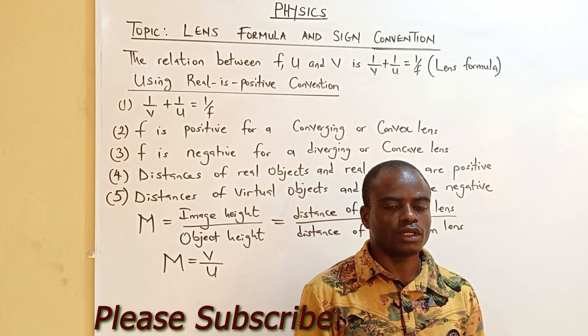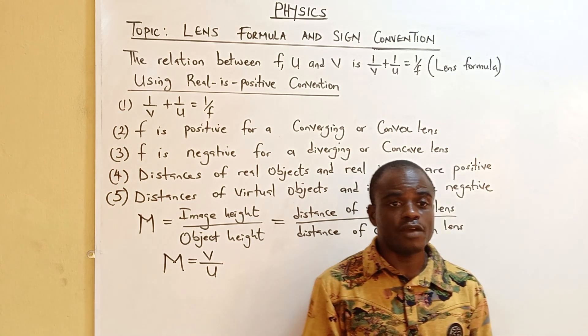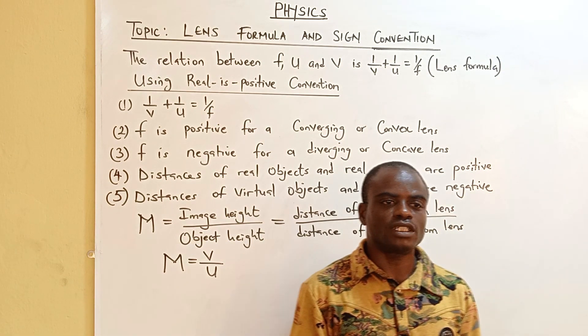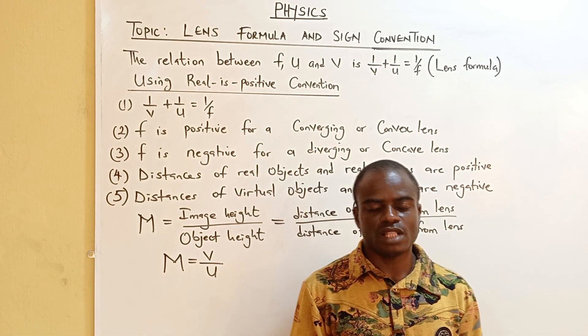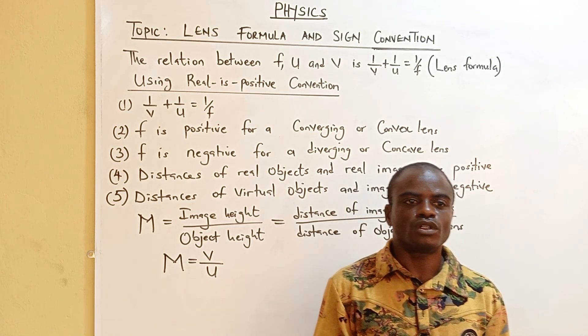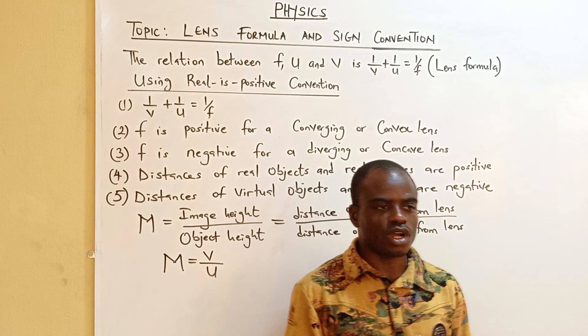And what we need to also know is that f is positive for converging lens or convex lens. f is negative for diverging lens or concave lens.